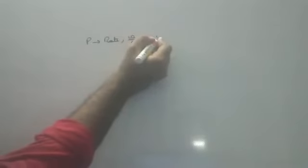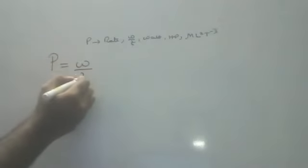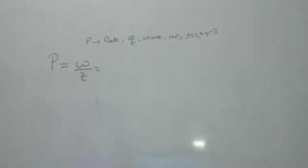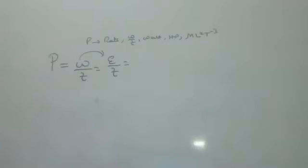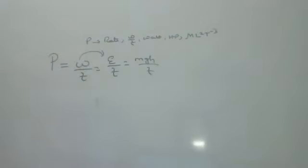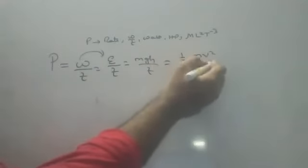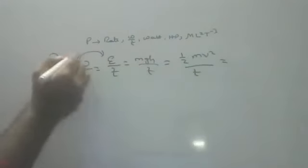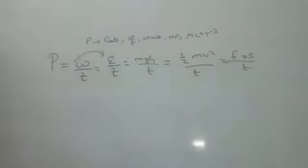Power also has various formulas. Since work and energy are equivalent, power can be written as energy by time. If you use potential energy, you can write mgh by t. If you use kinetic energy, you can write half mv² by t. If work equals force into displacement, then power equals force into displacement by time.